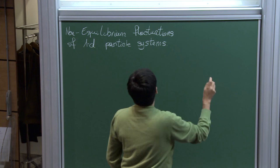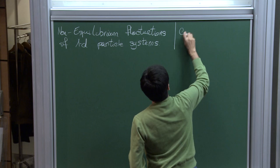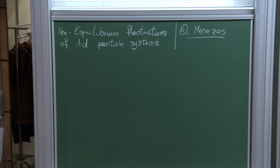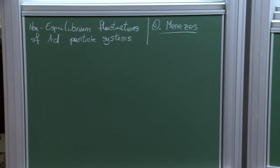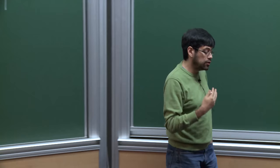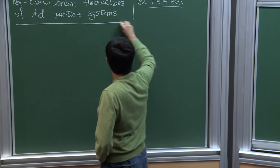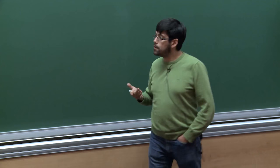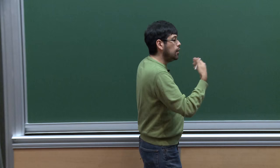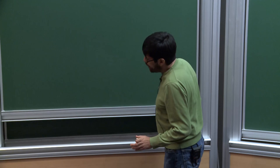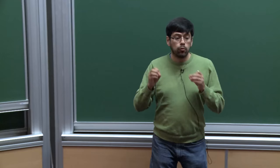What I'm going to talk about today is part of the PhD thesis of my student Ottavio Menezes from IMPA. I'm going to define a very simple model which already has features about non-equilibrium fluctuations. It's a system which is simple but doesn't have explicit invariant measures in the sense of Markov chains. It's a non-reversible system on which questions about thermodynamics and fluctuations are present. Maybe it's not the most natural model, but it's the simplest one on which we can already see what is going on.